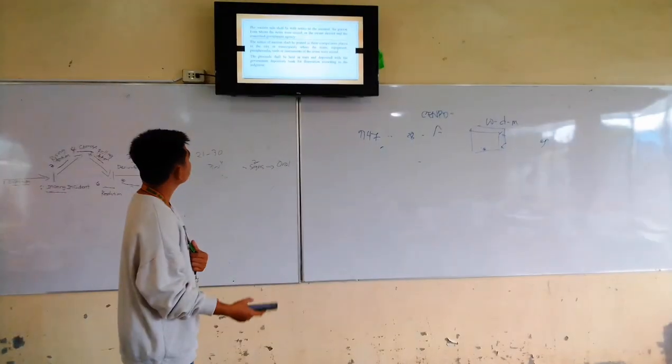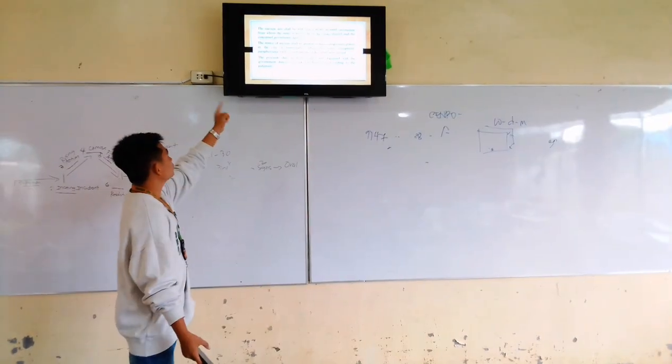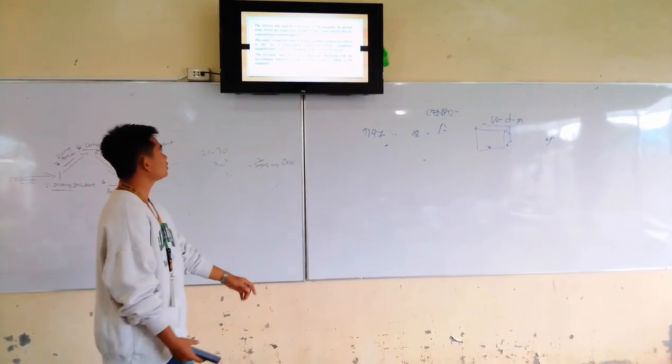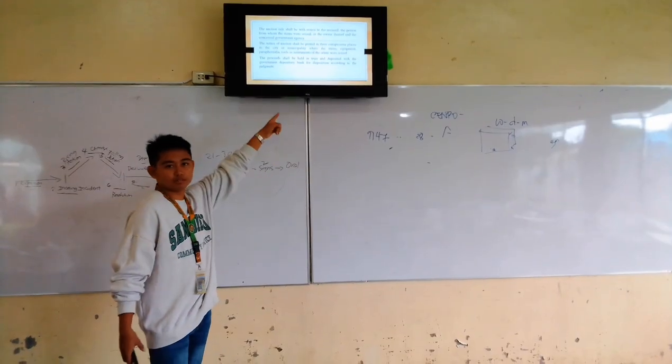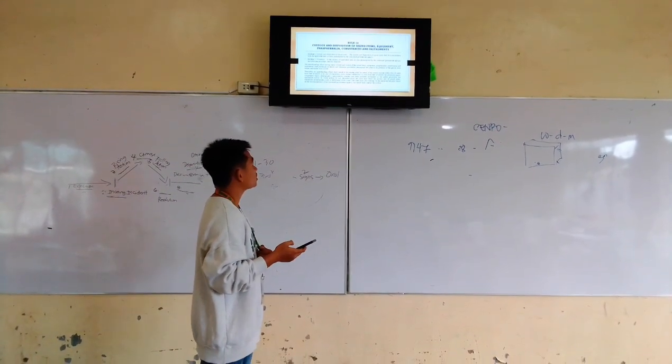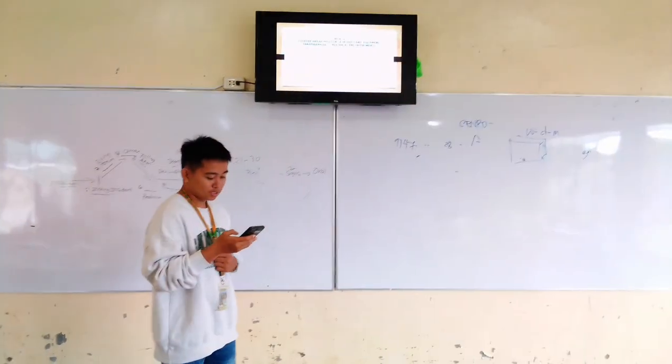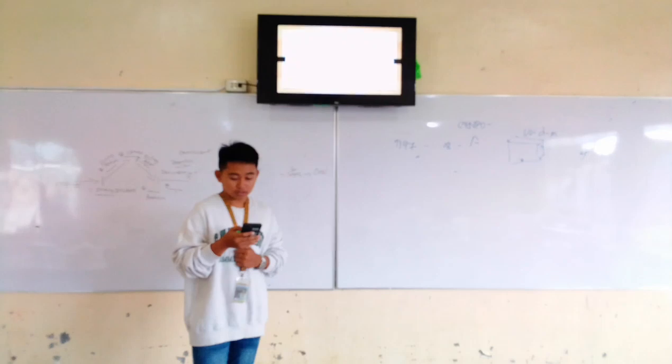The information about the auction will be posted in three easy-to-see places in the city or town where the seized items were taken or confiscated. This is done so that people in the area can easily find out about the auction and have the chance to participate if they are interested.